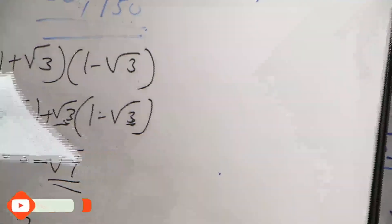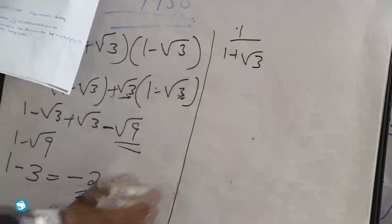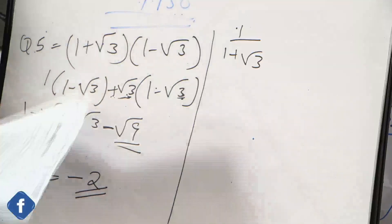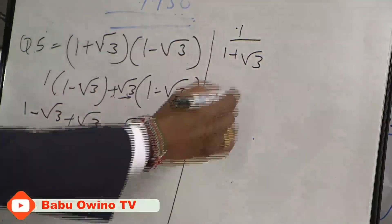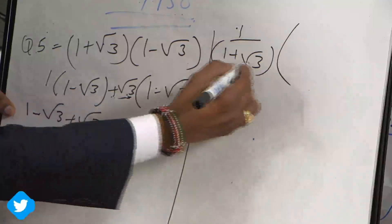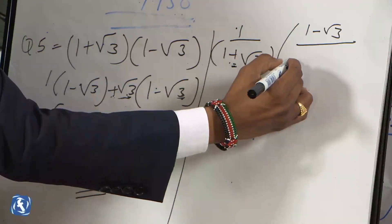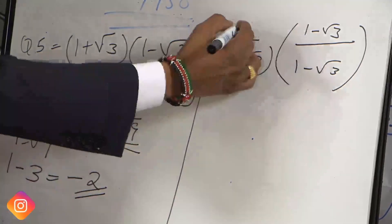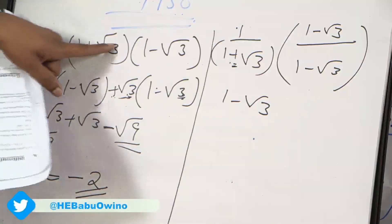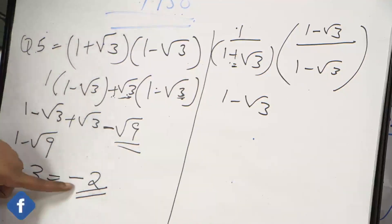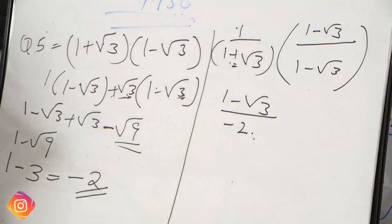We are told to use this result to evaluate 1 ÷ (1 + √3). We rationalize the denominator by multiplying numerator and denominator by the conjugate (1 − √3). The numerator becomes (1 − √3), and the denominator becomes (1 + √3)(1 − √3) = −2. So the result is (1 − √3) ÷ (−2).